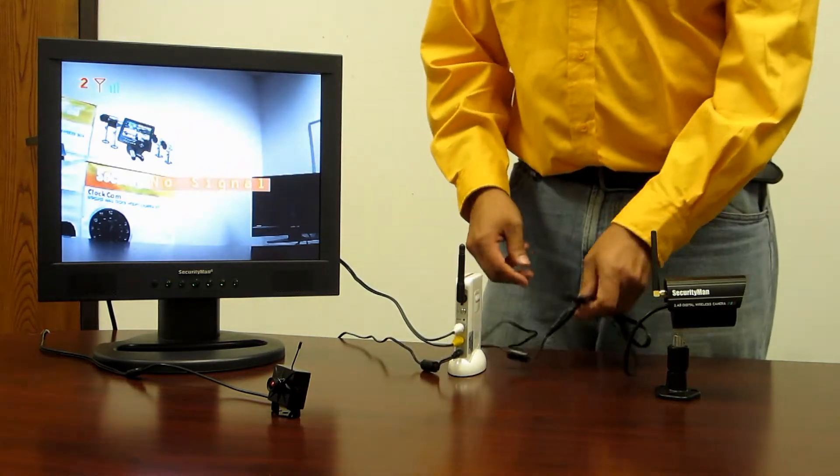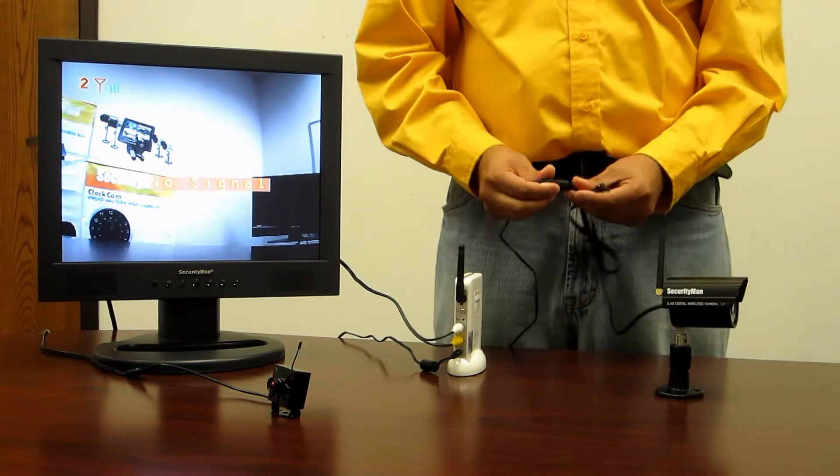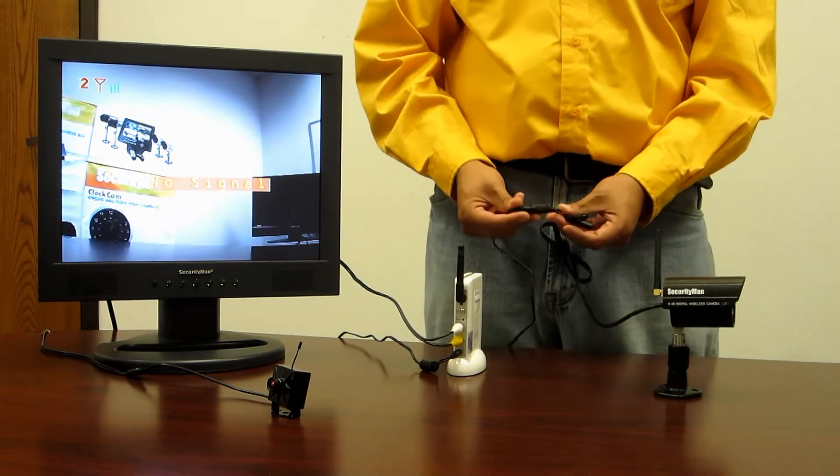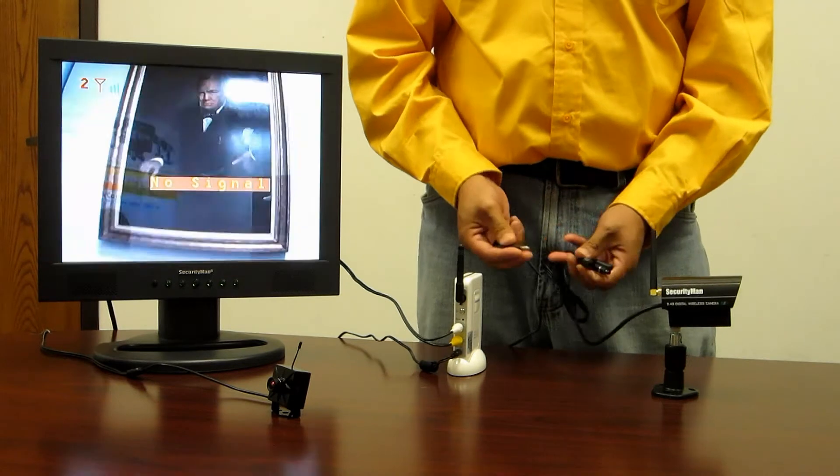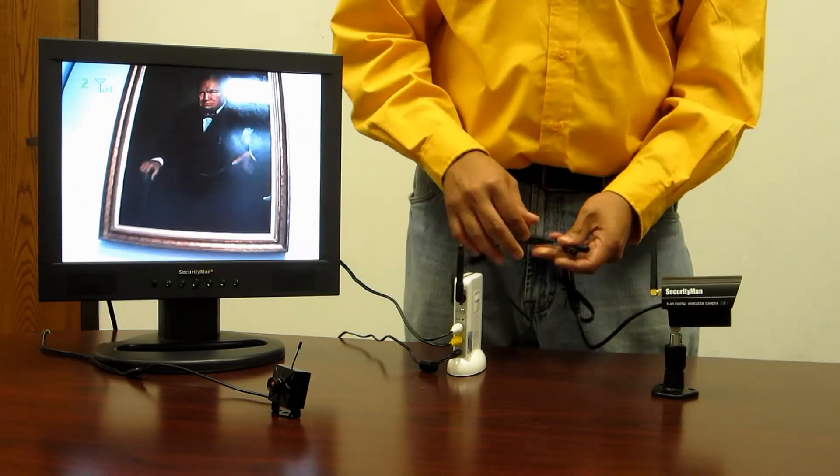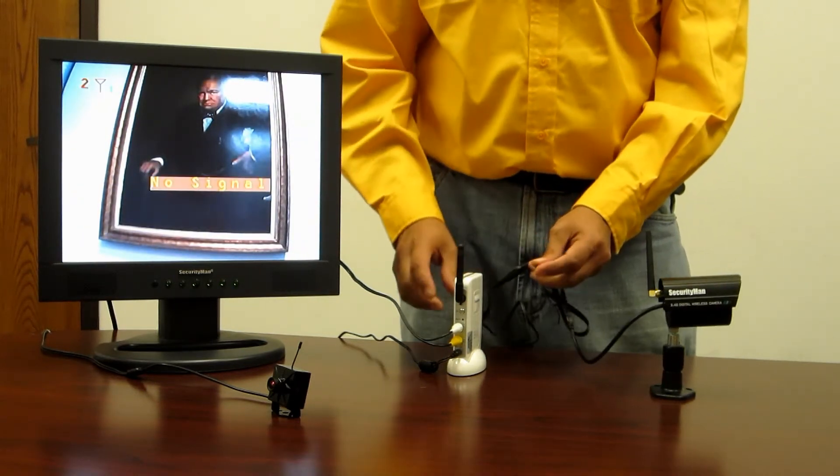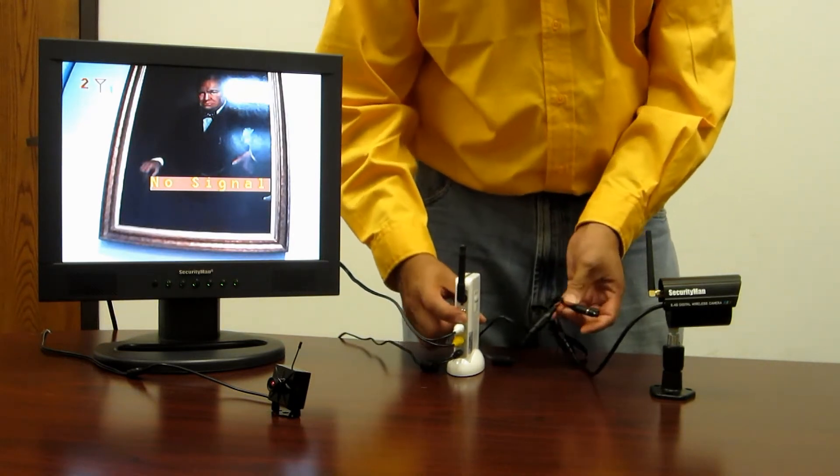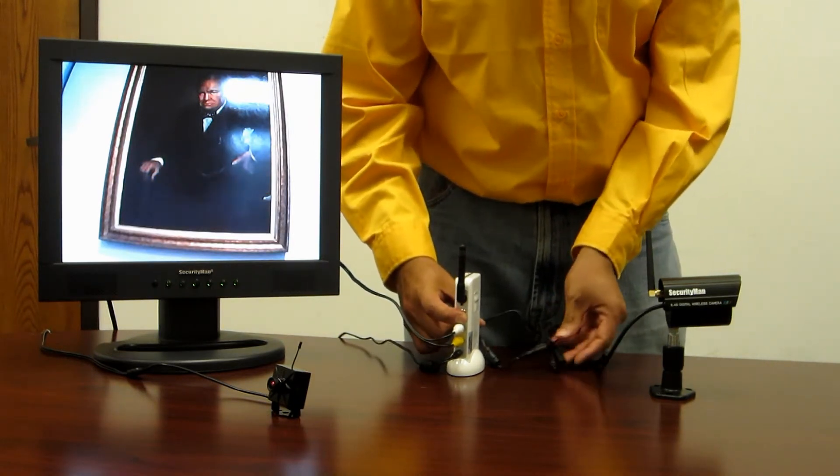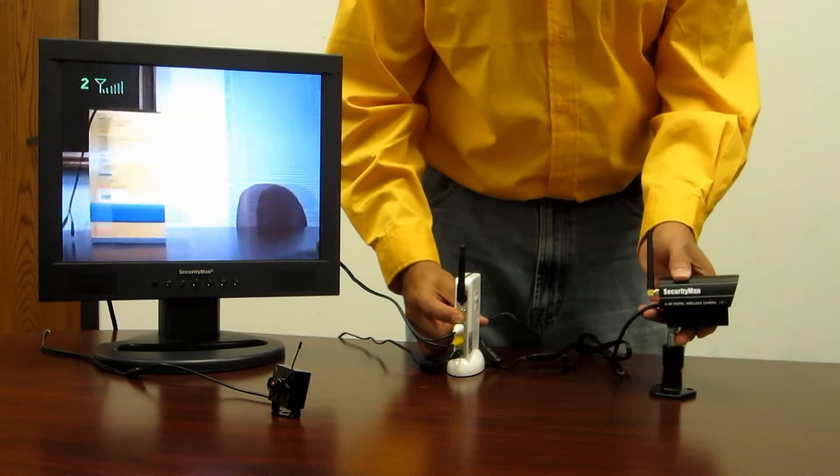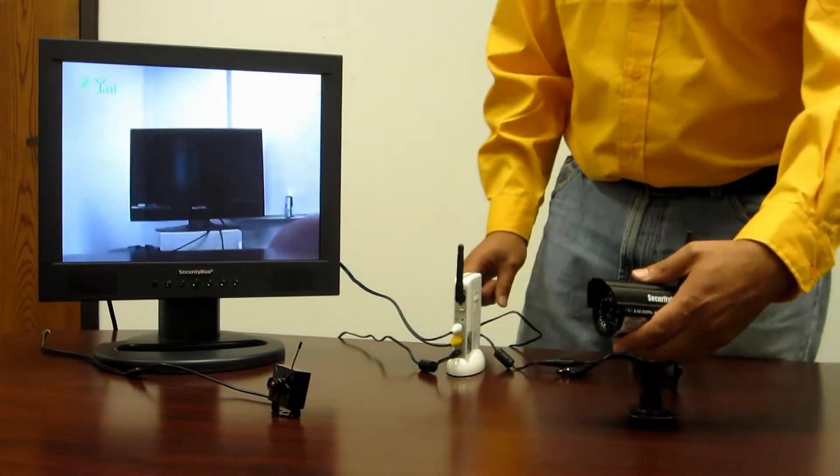Now all you have to do is power up your add-on camera. Plug it into the power supply, press the pairing button on the camera, and the pairing button located on the receiver. You should now get the camera image from your camera.